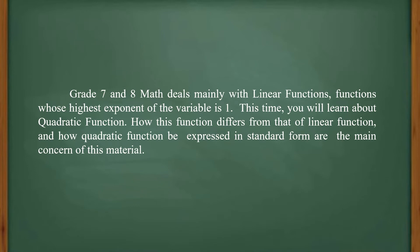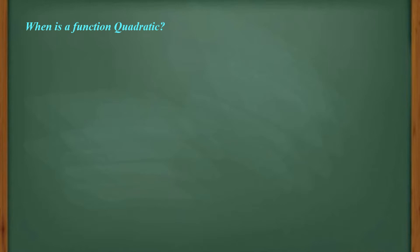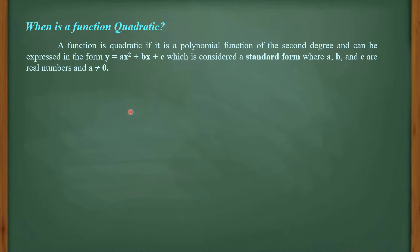Grade 7 and 8 math deals mainly with linear functions — functions whose higher exponent of the variable is 1. This time, you will learn about quadratic function. How this function differs from linear function and how it can be expressed in standard form are the main concerns of this material. A function is quadratic if it is a polynomial function of the second degree, expressed in the form y = ax² + bx + c, where a, b, and c are real numbers and a ≠ 0.